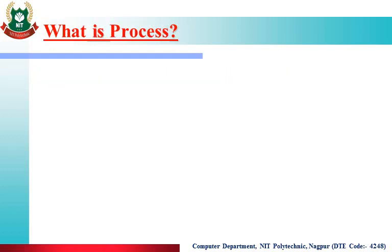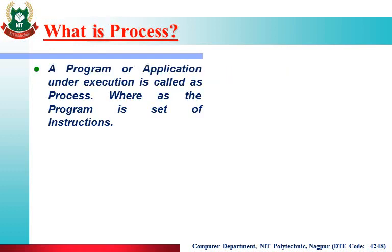First, let us see: what is a process? A program or application under execution is called a process, whereas the program is a set of instructions. If we understand program and process, then first, if I talk about a program, it is static. Program means a set of instructions.